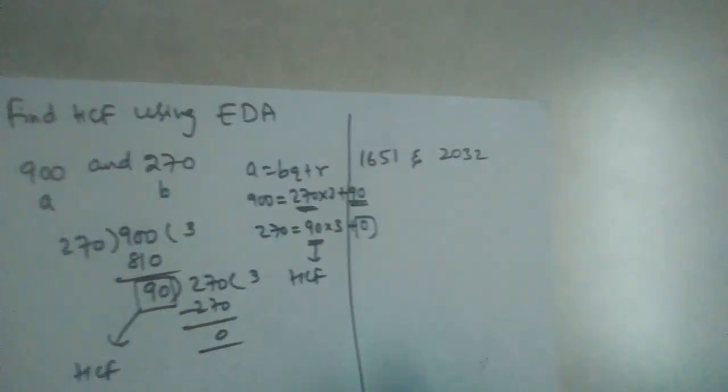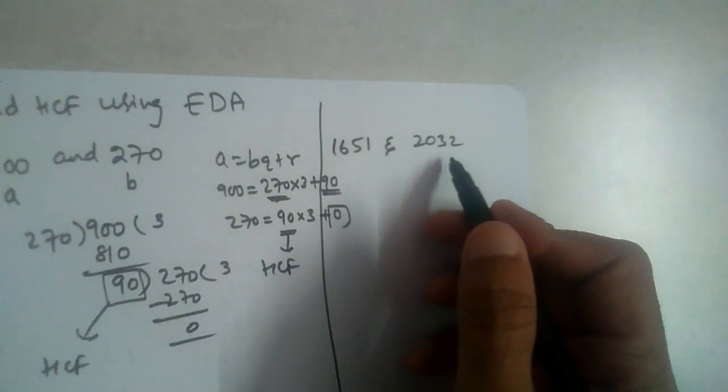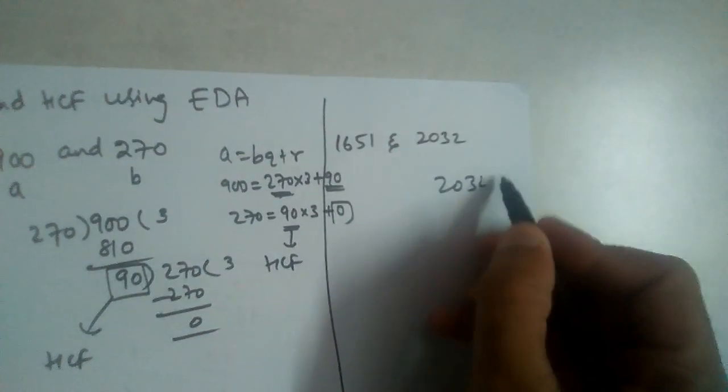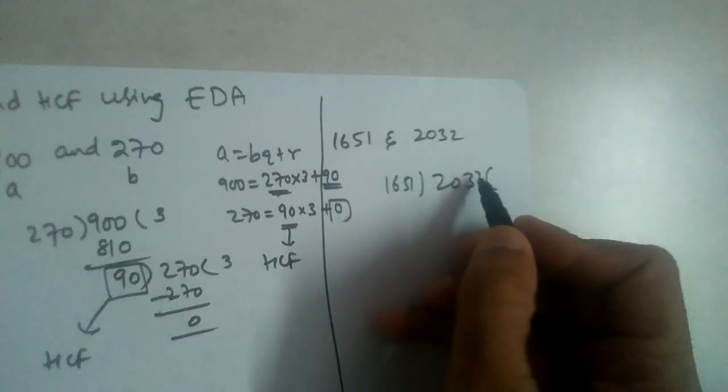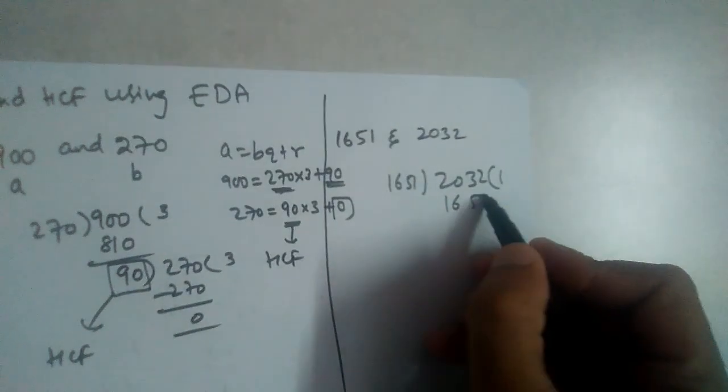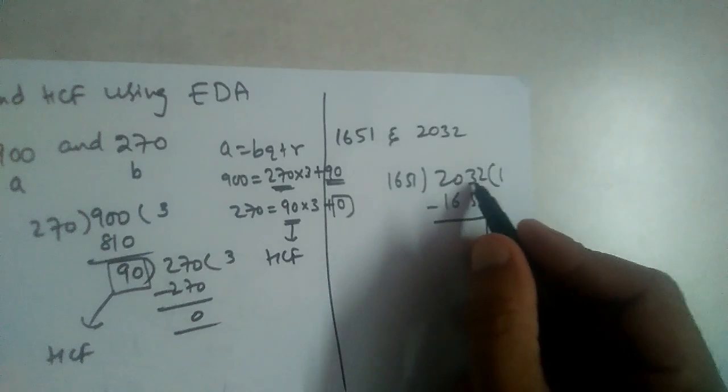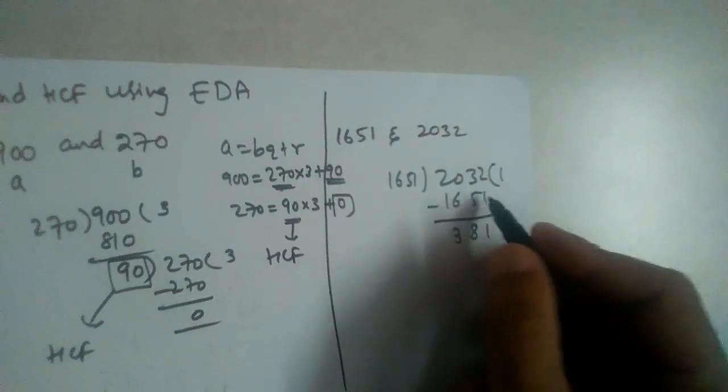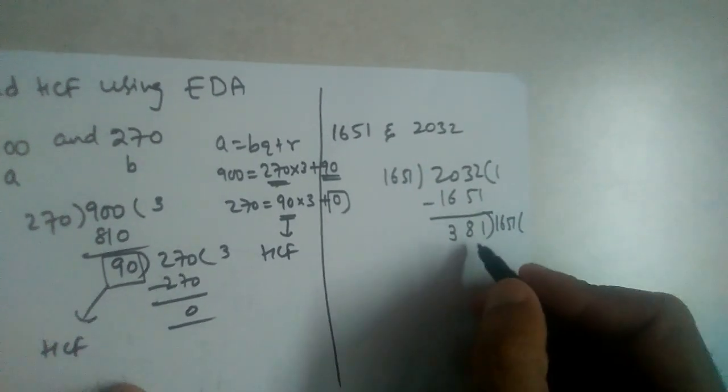All right, we have 1651 and 2032. So 2032 divided by 1651. 1651 once is 1651. Subtract, this will have 1, this is 8, 3, so 381. Now 1651 should be divided by 381.